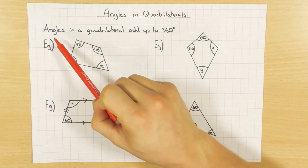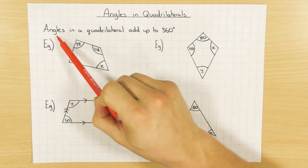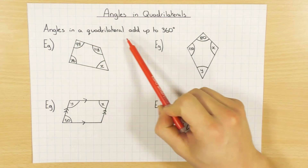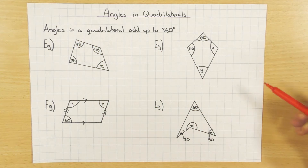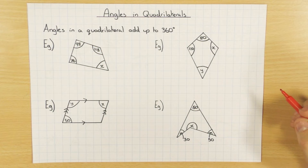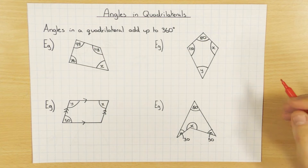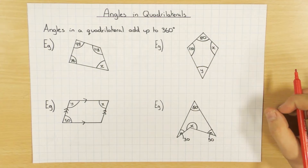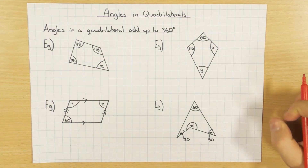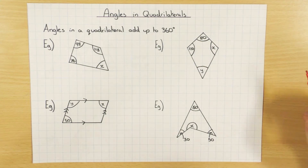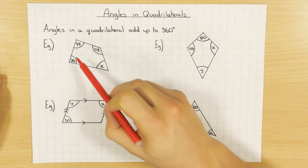The next fact that you need to know, and hopefully you do know this, is that angles in a quadrilateral add up to 360. That's a fact you need to know, otherwise you're going to struggle with all the questions that come up. So that's the thing we need to remember throughout this video. Let's get started then.